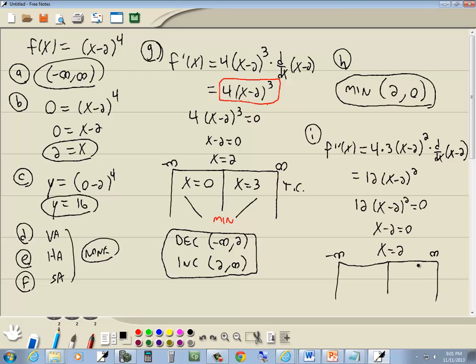We want to build our table of intervals. Pick test cases. Something between negative infinity and 2, like 0. Something greater than 2, like 3. And we want to plug them into our second derivative, which is right here. Now this one, we don't need to actually even plug them in. Because 12 is positive, and when we square something, it's always positive. So positive times positive means it's always positive. So this is concave up, and this is concave up.